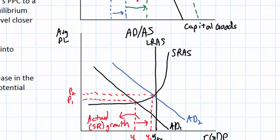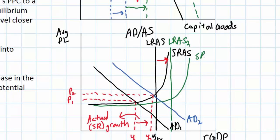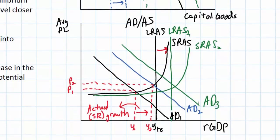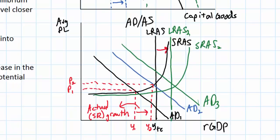Long-run potential economic growth is illustrated as an outward shift in the long-run aggregate supply curve from LRAS to LRAS2. This outward shift represents an increase in the full employment level of output. Along with LRAS, we'll see the short-run aggregate supply curve shift out to SRAS2, and aggregate demand will shift out as well to AD3. The new equilibrium level of output — the new full employment level of output — is at a higher point than before the outward shifts in AD and AS.